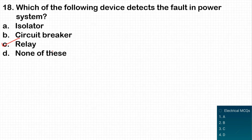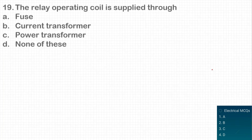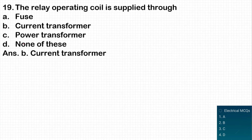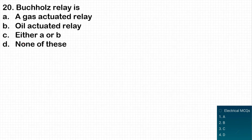The next question: the relay operating coil is supplied through which device? The current transformer (CT) is the device through which the fault current is given to the relay for sensing. So option B — current transformer — is the correct answer.